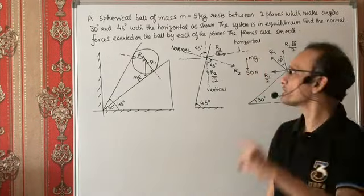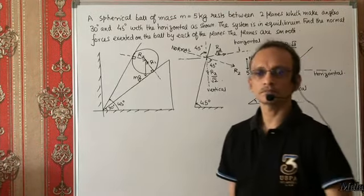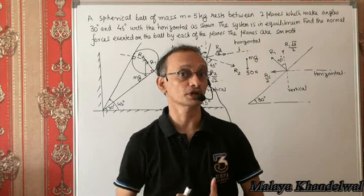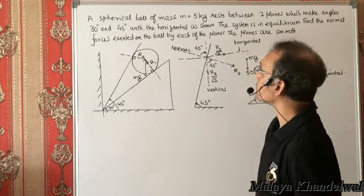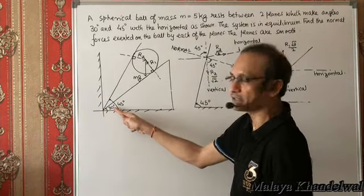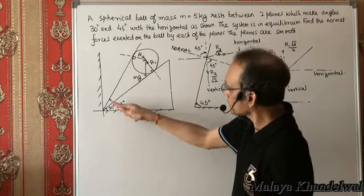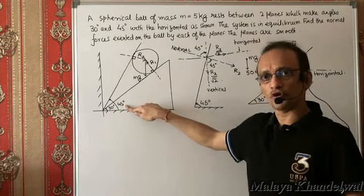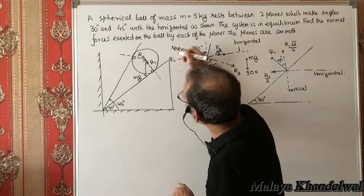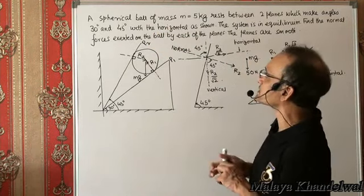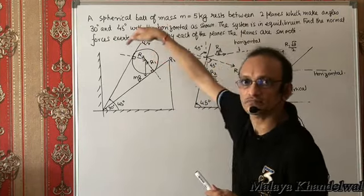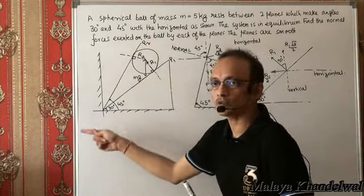Here I bring another problem on inclined planes, but something that will involve applying rules for equilibrium. We have a situation where there are two inclined planes: one making an angle of 30 degrees with the horizontal, and another making an angle of 45 degrees with the horizontal. Sandwiched between these two planes — call them plane P1 and plane P2 — is a sphere of mass 5 kg. The planes are given to be smooth; all surfaces involved are smooth.